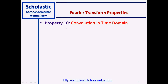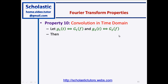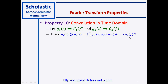The last property, property number ten: convolution in the time domain. We have two functions g1(t) and g2(t), with G1(f) and G2(f) in the frequency domain. The time domain convolution g1(t) * g2(t) — written as the integral from minus infinity to plus infinity of g1(τ)·g2(t - τ) dτ — in the frequency domain is equal to G1(f) times G2(f). Time domain convolution becomes frequency domain multiplication. Those are the ten properties of the Fourier transform.